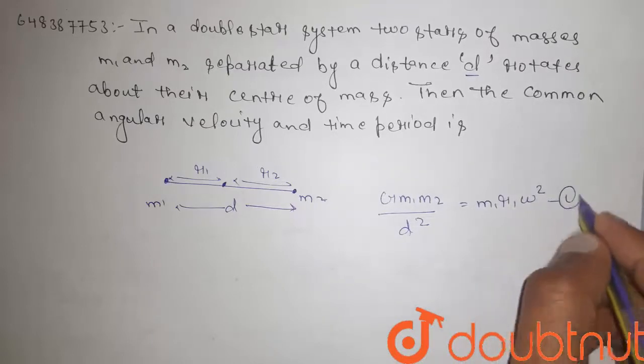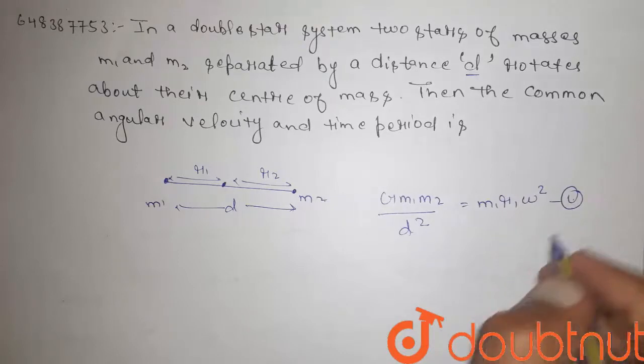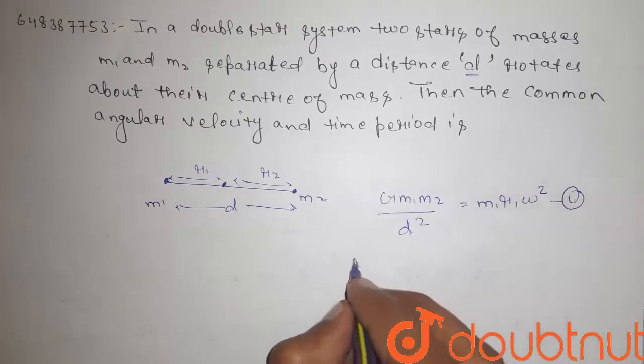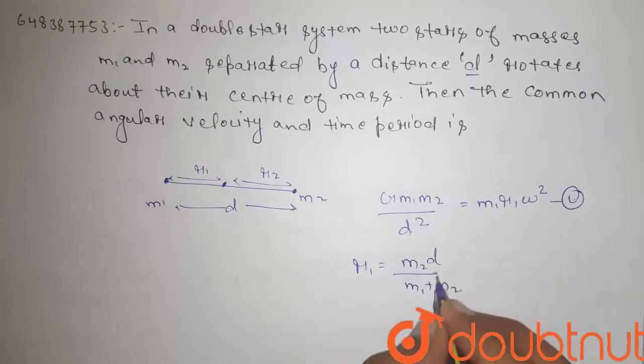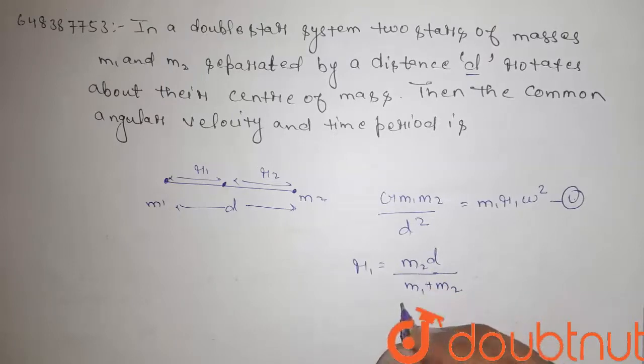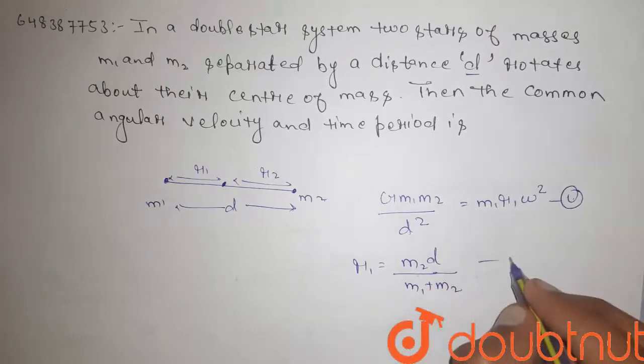Distance of the center of mass from m1, that is r1, equals m2 times d divided by m1 plus m2. We can calculate this by two mass system. This is equation 2.